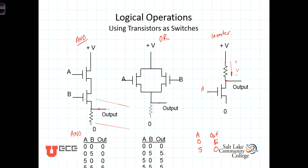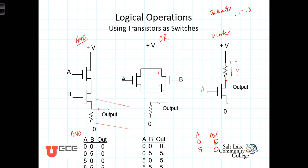Throughout this discussion we've been assuming ideal transistors with no voltage drop across them while conducting. In fact, that's not exactly right. When the transistor is fully conducting, it is said to be saturated. There is a finite, albeit small, voltage across the transistor when it's saturated — that saturation voltage ranges anywhere from about 0.1 to 0.2 or 0.3 volts, depending upon the structure of the transistor.